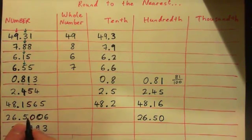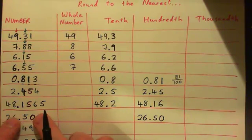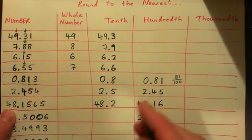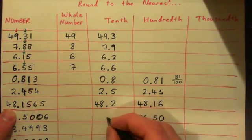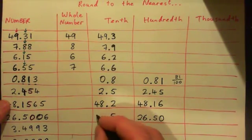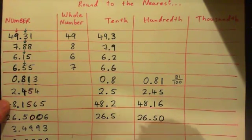And the tenths again — I'm looking at the digit five. What comes after the five? Zero. So I round down. 0.5 — so 26.5.